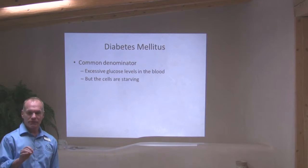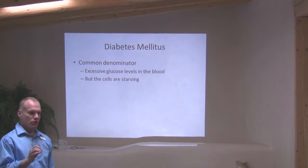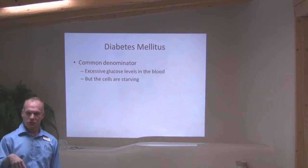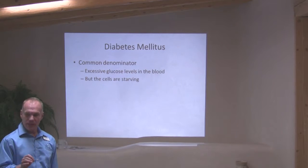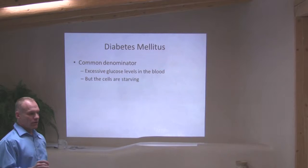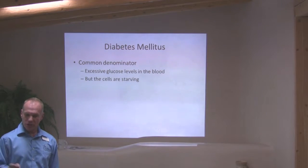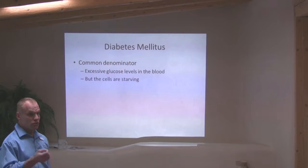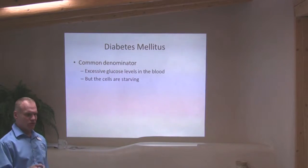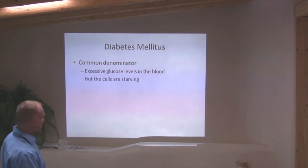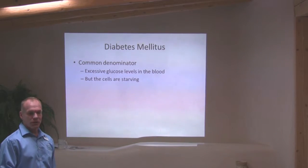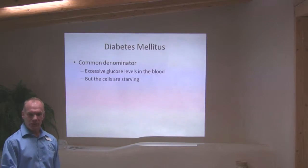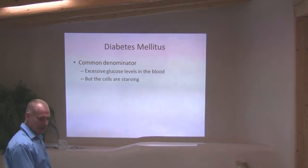The common denominator in all types of diabetes is extra sugar in the bloodstream. If you tasted the blood, it would taste sweet as well. But the cells are starving — sugar is like gasoline to a car; the cells use it to burn for cellular function. It's just like being in the ocean in a lifeboat, thirsty and surrounded by water but unable to use any. The cells are swimming in sugar but can't get it inside them.